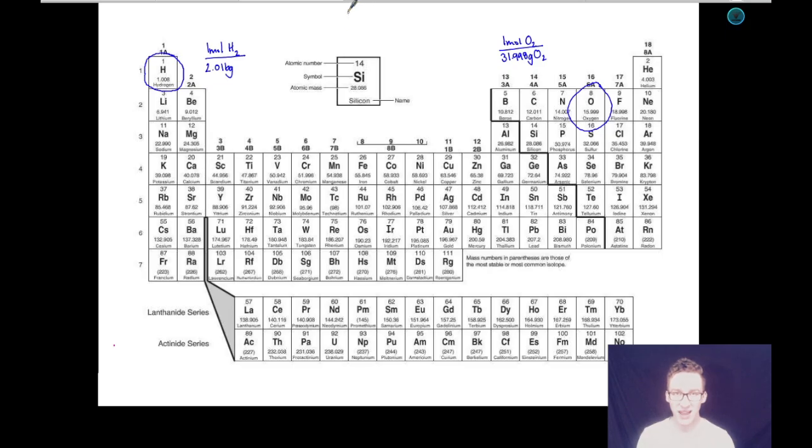And if I wanted the mass of one mole of water, I would simply need to add the masses of the individual elements that make up this compound. And for water, I would get 18.015 grams.